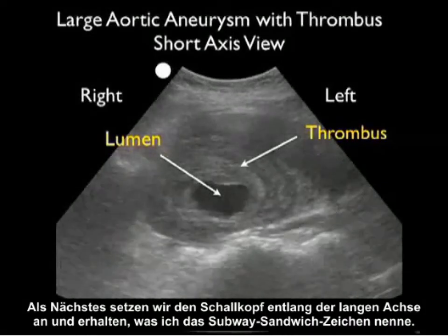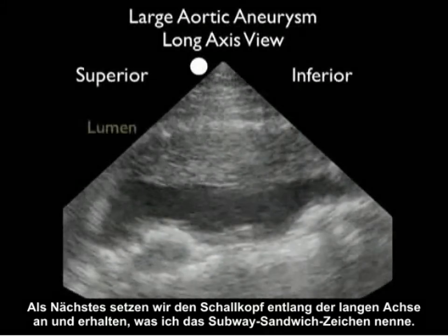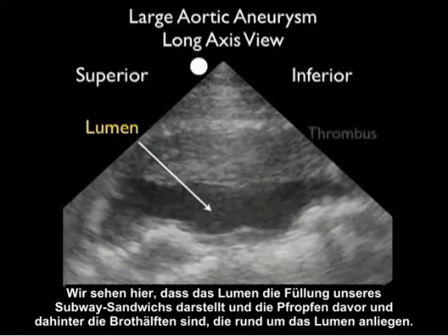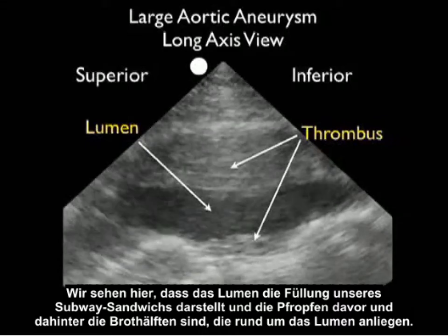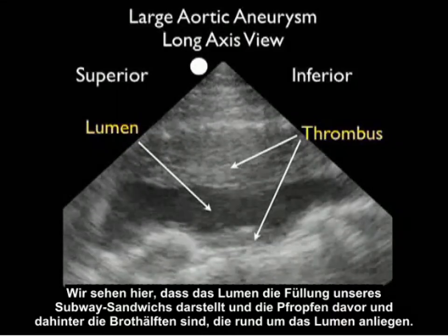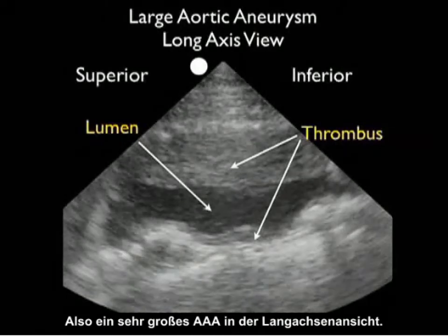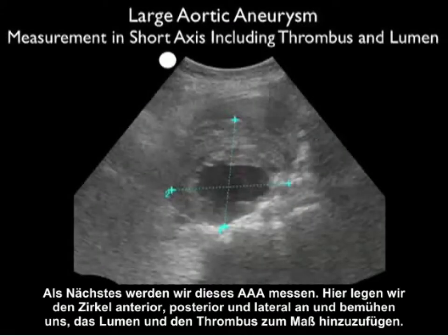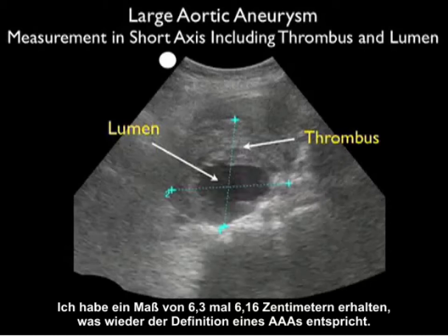Next, we're going to position the probe in a long axis orientation — I like to categorize this as the subway sandwich sign. What we see here is the lumen making up the filling of our subway sandwich, and notice the anterior and posterior burden of clot making up the loaves of the bread, circumferentially surrounding the lumen. We're putting the calipers from anterior to posterior and laterally, adding the lumen and the thrombus to our measurements, and we come up with a measurement of 6.3 by 6.16 centimeters, again making the definition of a AAA.